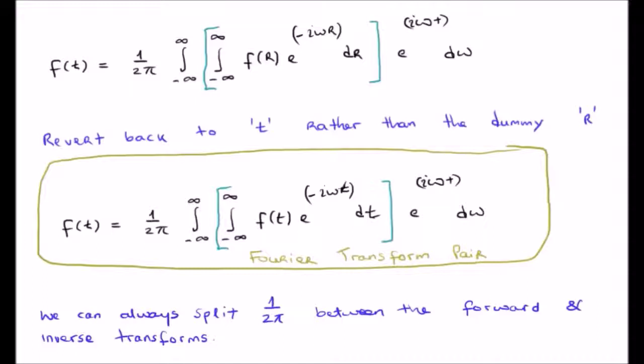The reason it's called a Fourier transform pair is that this expression contains both the forward and inverse Fourier transforms, and the forward and inverse transforms are known as transform pairs.